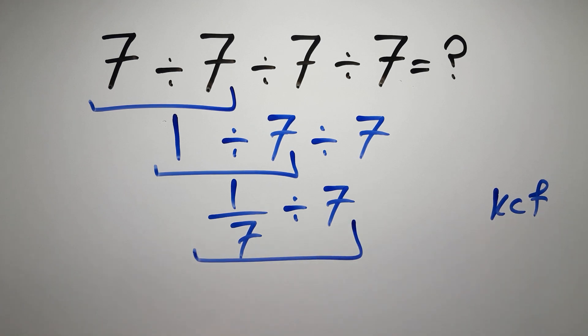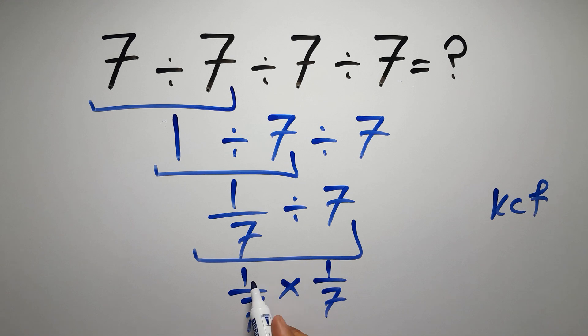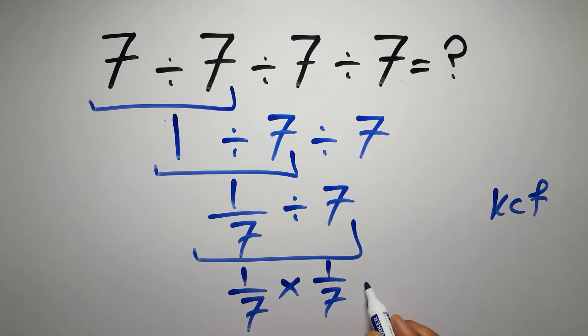We can write: keep the first fraction, change division to multiplication, and flip the second fraction. So we have 1 over 7 times 1 over 7, which equals